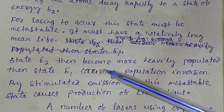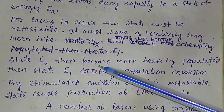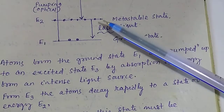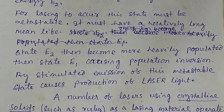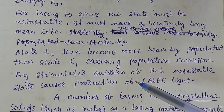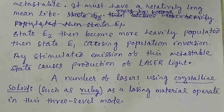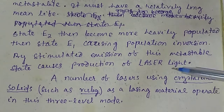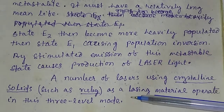The energy state E2 becomes more heavily populated than state E1, causing population inversion. As stated, population inversion is necessary for lasing action. Here E2 has more atoms and E1 has fewer atoms, so population inversion takes place. As a result, stimulated emission from this metastable state occurs, which causes the production of lasing light. There are various materials in which three-level lasing action takes place — like a ruby laser, which we will discuss in the next video.